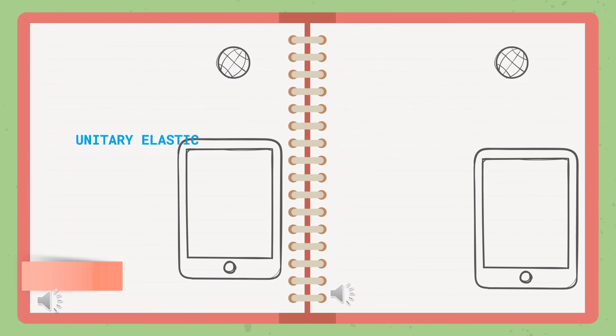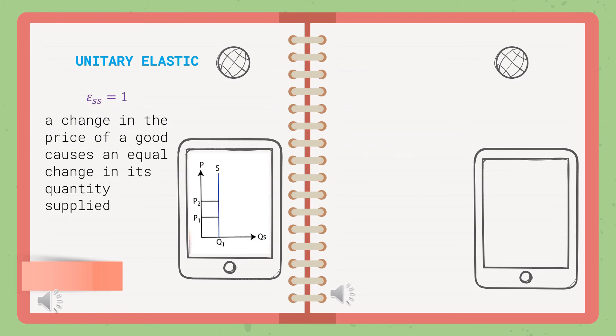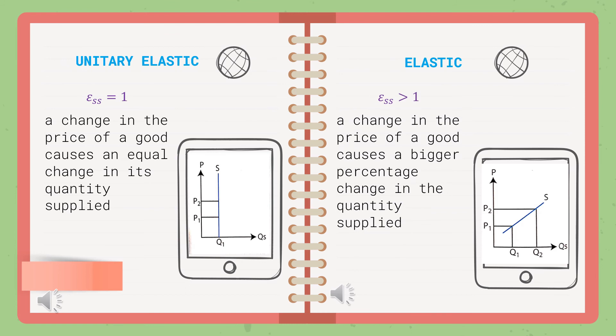The third degree is Unitary Elastic, where elasticity of supply equals 1 — a change in price causes an equal change in quantity supplied. The fourth degree is Elastic, where elasticity is greater than 1. A change in price causes a bigger percentage change in quantity supplied. For example, the price of a fidget spinner increased by 10%, so the quantity supplied increased by 20%, because fidget spinners can easily be produced.